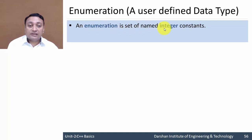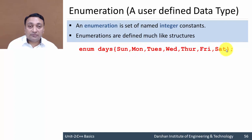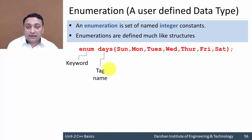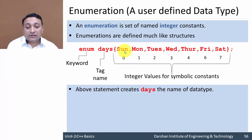Next is enumeration. Enumeration is a user-defined data type, like structure, union, or class. It is a set of named integer constants. Enumerations are defined much like structures — using the 'enum' keyword followed by the enumeration name and the integral constants inside curly brackets. Enumeration automatically assigns integer values starting from 0, 1, 2, 3, and so on.